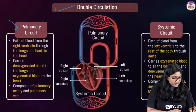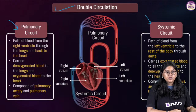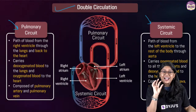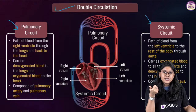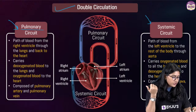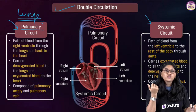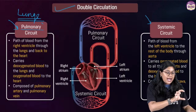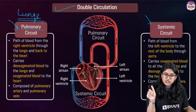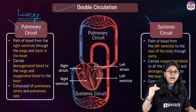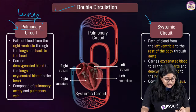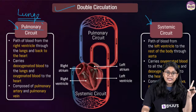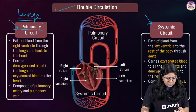We are done with double circulation. Here are two important terms: pulmonary circuit and systemic circuit. Pulmonary circulation is the circulation happening from lungs to the heart and heart to the lungs. Systemic circulation is the circulation happening from heart to the body.